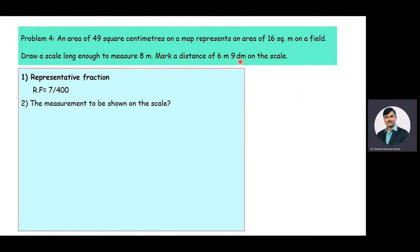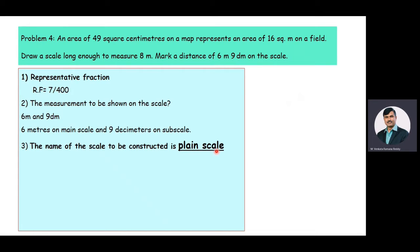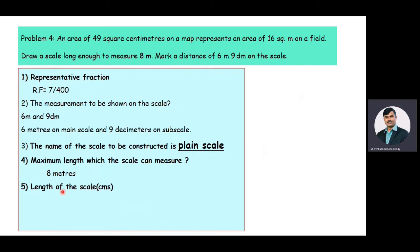The measurement to be shown on the scale is 6 meters and 9 decimeters — 6 meters on the main scale and 9 decimeters on the subscale. This means we are going to construct a plane scale. A plane scale gives information about the main scale and its immediate subscale. The maximum measurement to be shown on the scale is 8 meters. The length of the scale is calculated in centimeters because the ruler scale is in terms of centimeters.